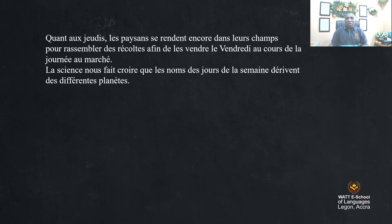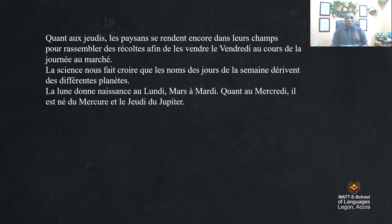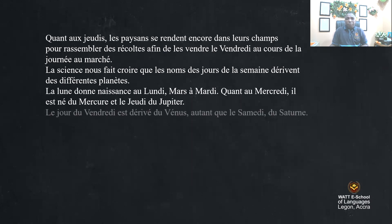La science nous fait croire que les noms des jours de la semaine dérivent de différentes planètes. Science has revealed that the names of the days of the week derive from the different planets. La lune donne naissance au lundi, Mars au mardi. Monday derives from the planet lune, that is moon, and mardi from Mars. Mercredi est né du Mercure et le jeudi du Jupiter. Wednesday is from Mercury and Thursday from Jupiter. Le vendredi est dérivé de Vénus autant que le samedi du Saturne. Friday is from Venus and Saturday from Saturn.